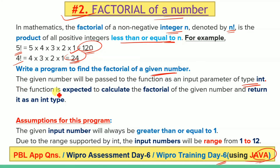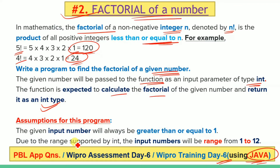The function is expected to calculate the factorial of the given number and return it as an int type. The assumptions for this program are that the given input number will always be greater than or equal to 1. Due to the range supported by int, the input numbers will range from 1 to 12.